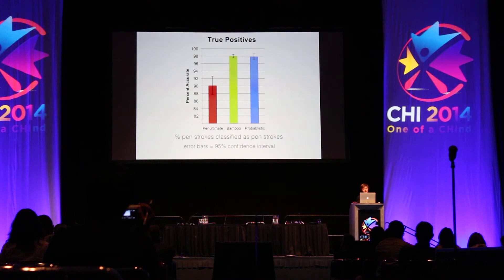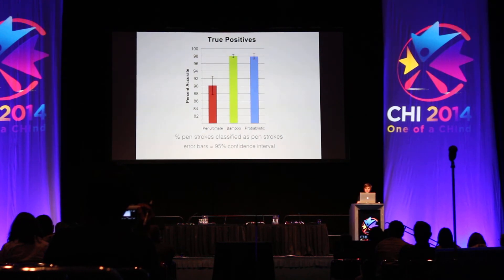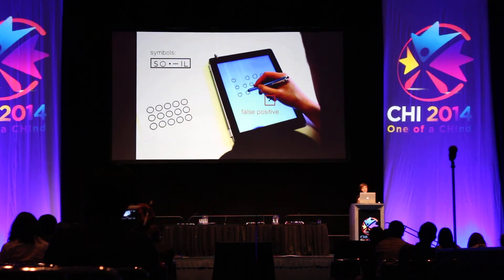Our approach, shown on the right, does about as well as Bamboo Paper at around 98% of pen strokes correctly identified. We also counted the number of palm touches mislabeled as strokes — what appears as unpleasant splotches when you lift your palm after writing on the screen.